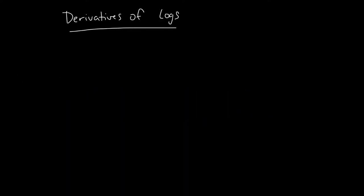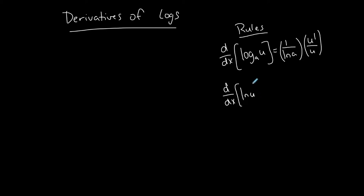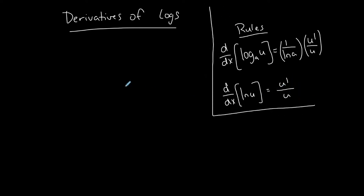We're going to do a couple of examples finding derivatives of logarithmic functions. You need these rules to find these derivatives. The first rule is the derivative of log base a of u, where u is an expression of x, is equal to 1 over ln of the base a times u prime over u. If the log has a base of e, which we represent as ln, the natural log, then it simplifies your derivative to just u prime over u. We're just going to do first derivatives.